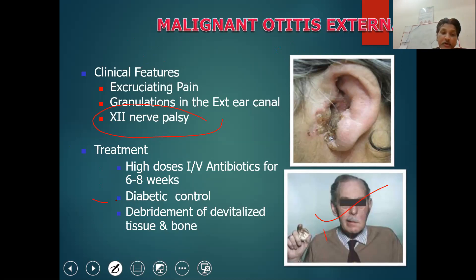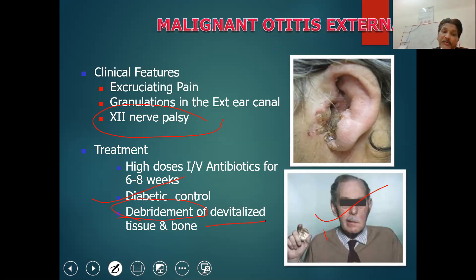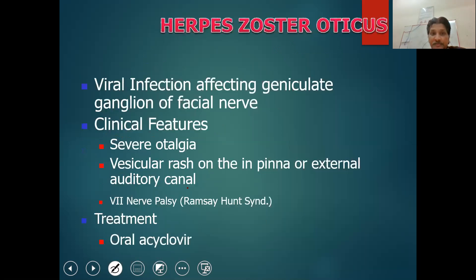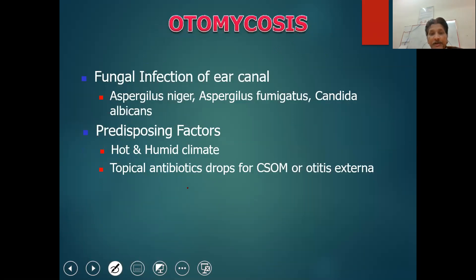Strict diabetic control should be offered to the patient. Debridement of devitalized or necrosed tissue should be done in operative cases, and a broad-spectrum intravenous antibiotic should be offered for an extended period of six to eight weeks. We will conclude this topic in the next class. Thanks for watching — please subscribe to the channel. Thank you very much.